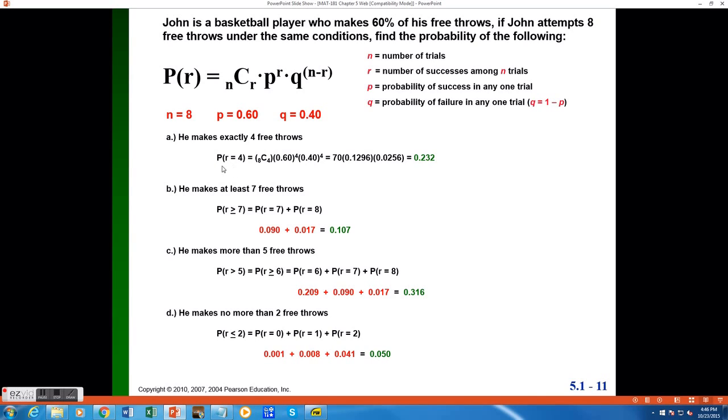So the probability that we make exactly 4 free throws would be a combination of 8 and 4, 0.6, the probability of success, raised to the 4, times 0.4, the probability of failure, raised to the 8 minus 4, which is also 4. Doing out these calculations one by one, I use my calculator and the combination function to find that 8 combination 4 is equal to 70, 0.6 raised to the 4th would be 0.1296, and 0.4 raised to the 4th would be 0.0256. Multiplying those probabilities together, we would get 0.232 as our answer. That is the probability that John makes exactly 4 free throws.